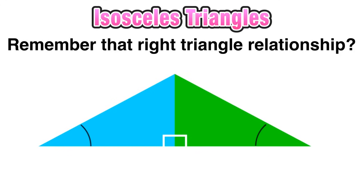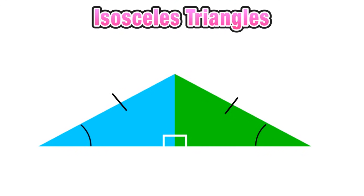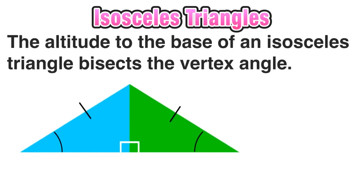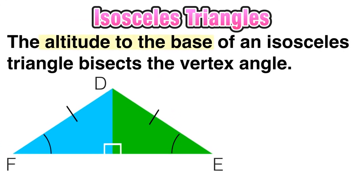Since those triangles are congruent, we know that corresponding angles and corresponding sides will also be congruent, and we see here that this matches our definition of an isosceles triangle. With this in mind, we can say that the altitude to the base of an isosceles triangle bisects the vertex angle.